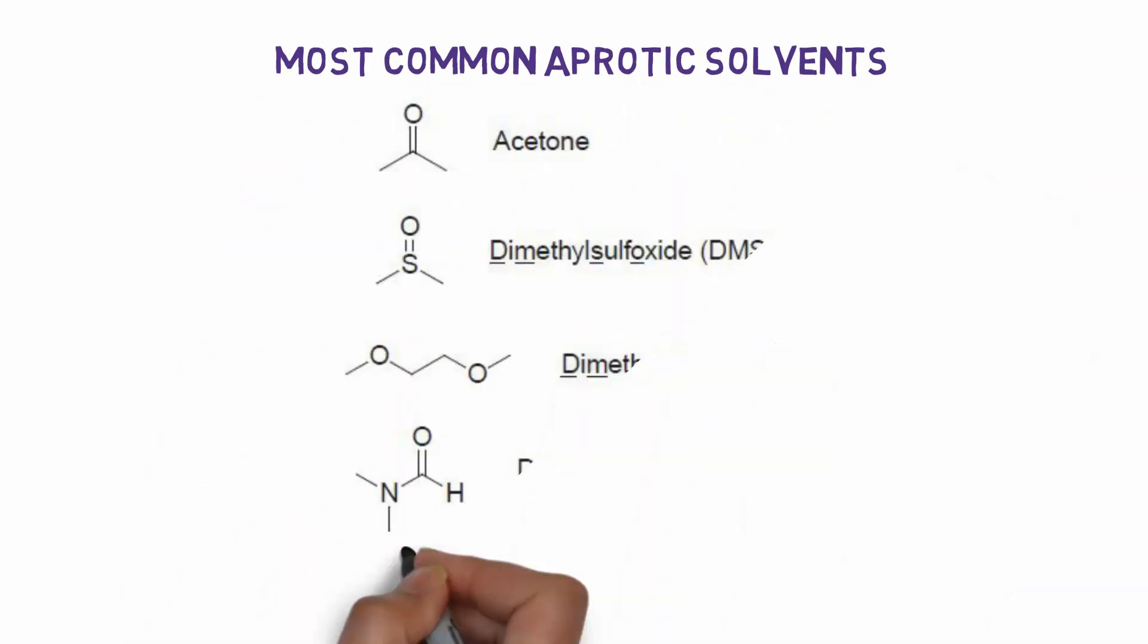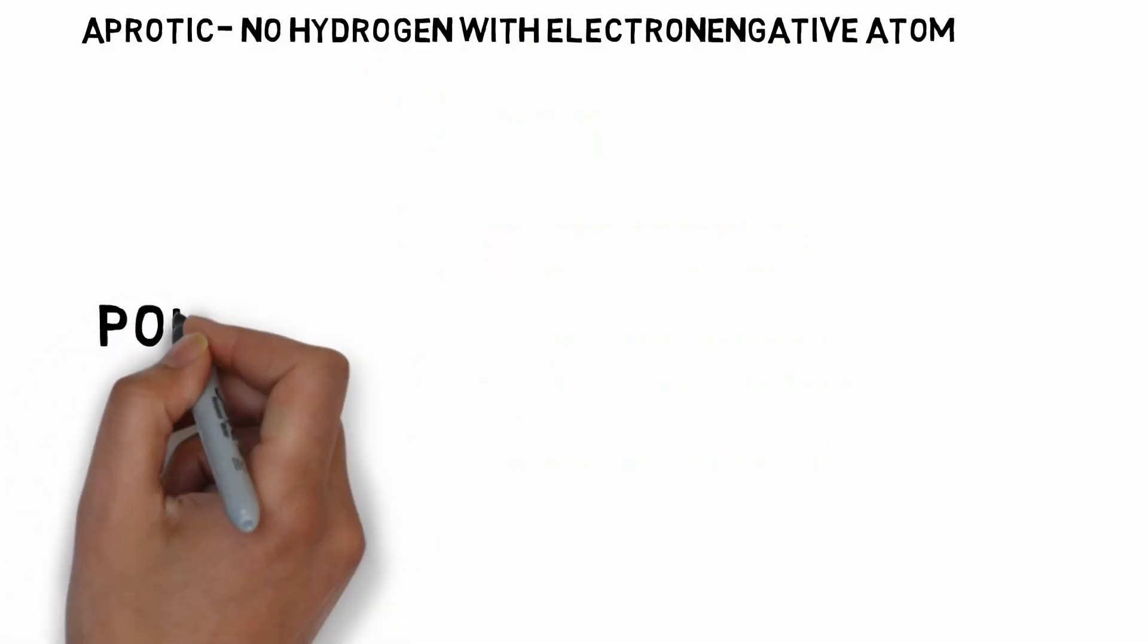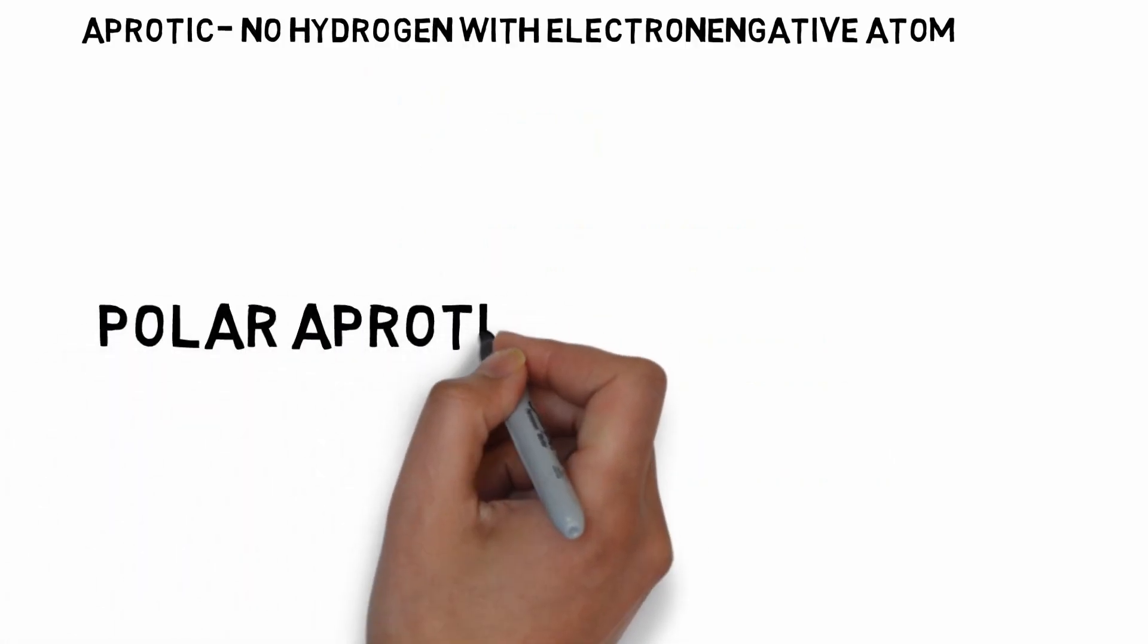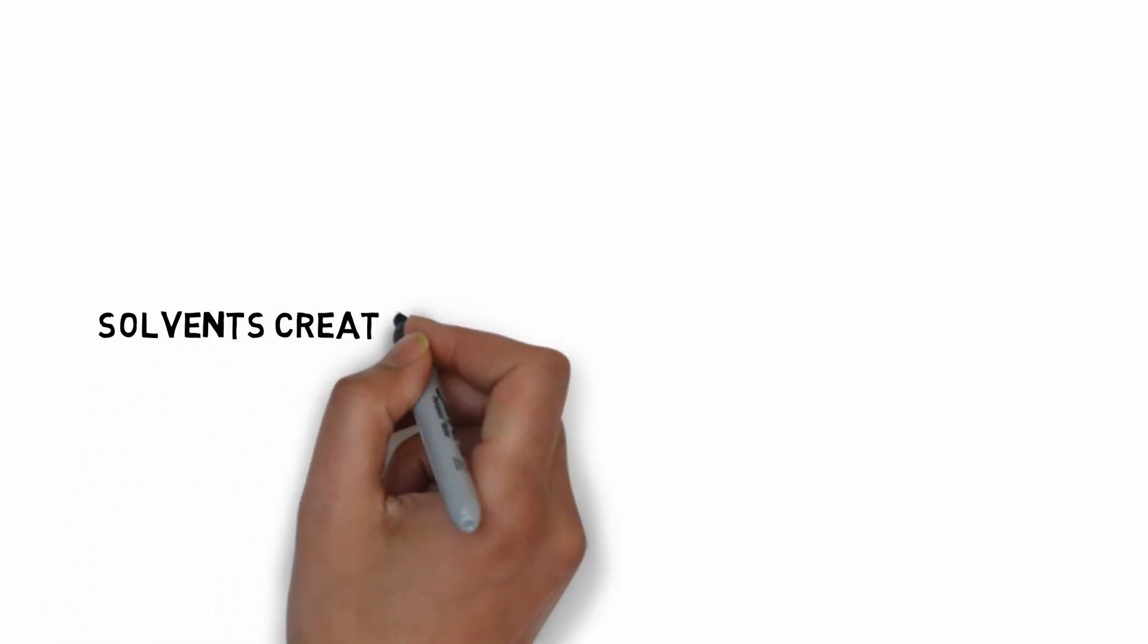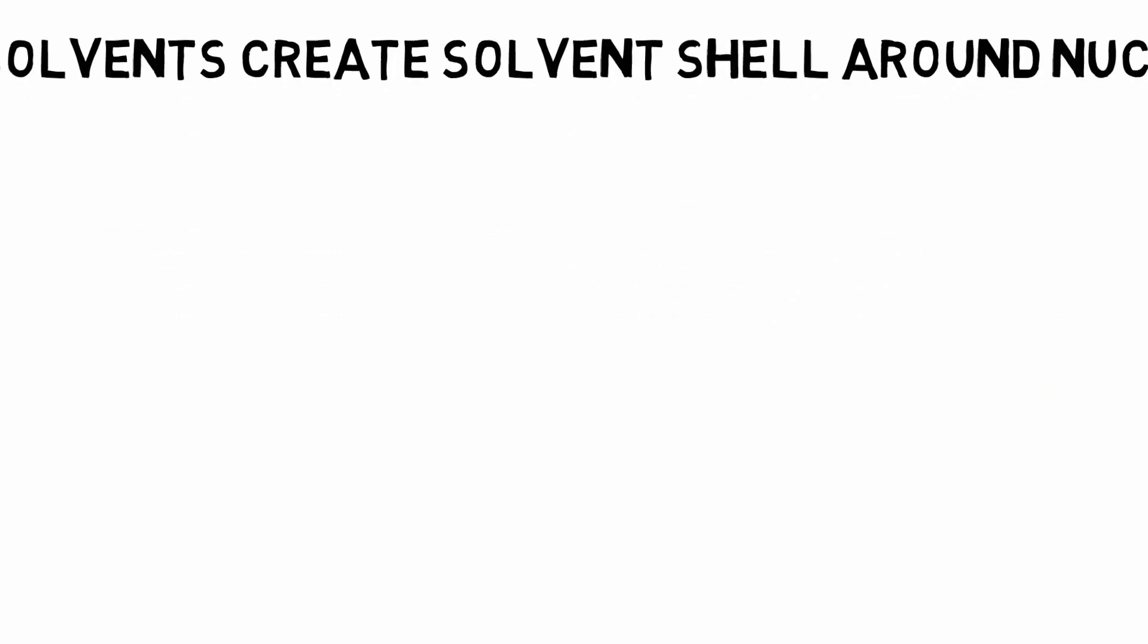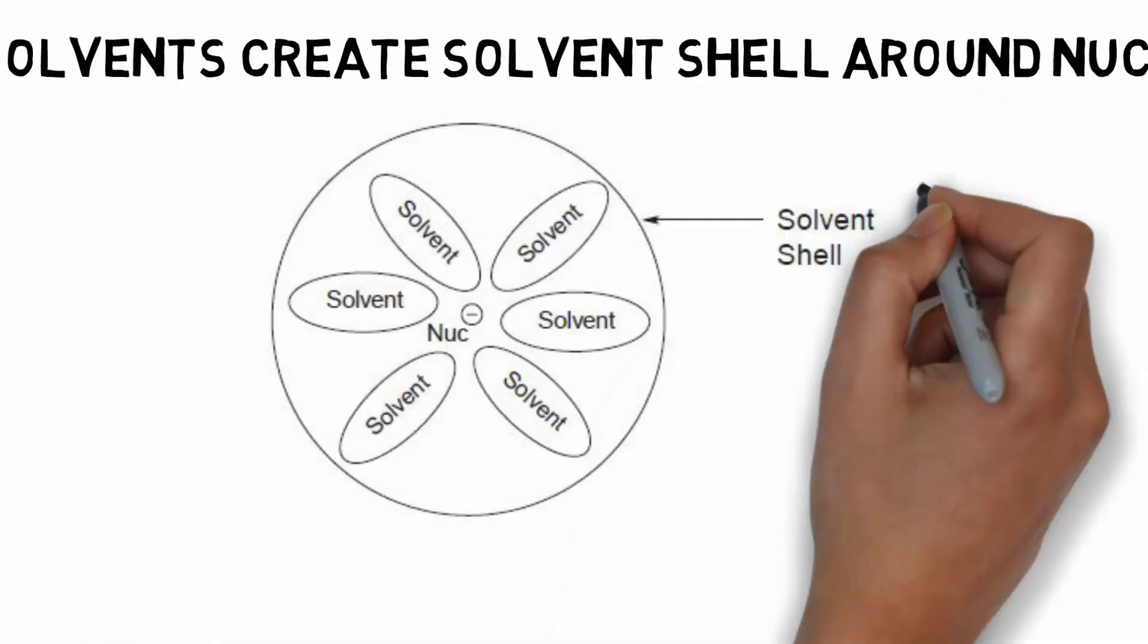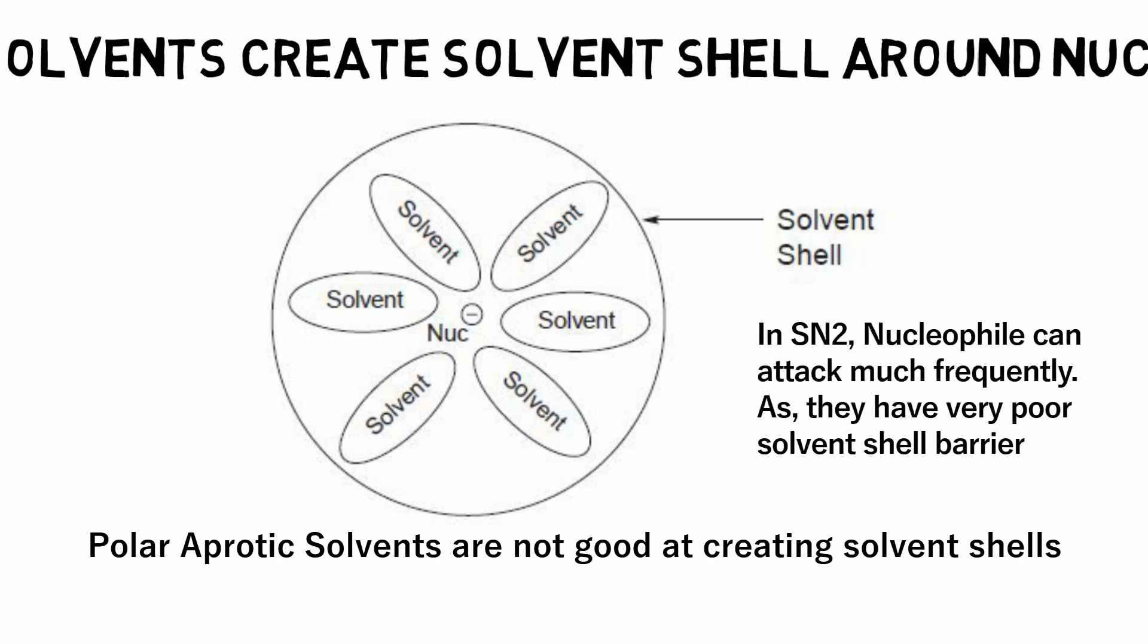Learn and practice. So polar aprotic solvents favor SN2. Why? Well, solvent creates a solvent shell around nucleophiles. When nucleophile is dissolved in the solvent, it's harder for a nucleophile to attack the electrophile by having an obstacle like this. Polar aprotic solvents are not good at creating solvent shell, and in SN2, the nucleophile is a factor to speed up the reaction rate. So, whenever the nucleophile wants, it can go attack the electrophile.